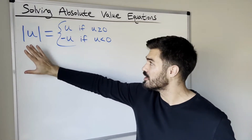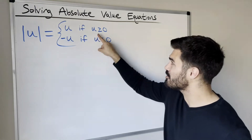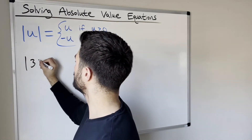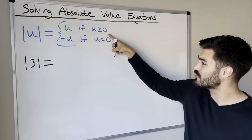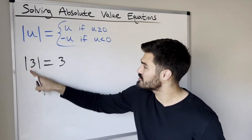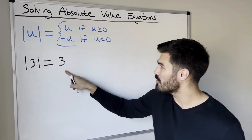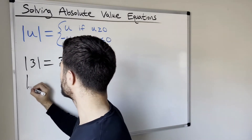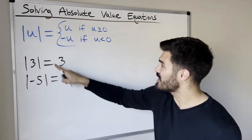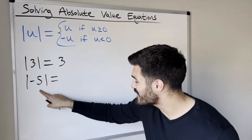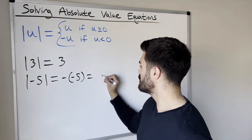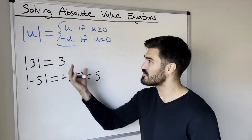The absolute value of u — u is just some real number. When we take the absolute value of a real number, if that real number is greater than or equal to zero, the absolute value of it is just itself. For example, the absolute value of 3 is 3, since 3 is greater than or equal to zero. Now what happens when u is less than zero? Take the absolute value of negative 5: since u is less than zero, the absolute value of u is negative u. So the absolute value of negative 5 is negative negative 5, which equals positive 5.